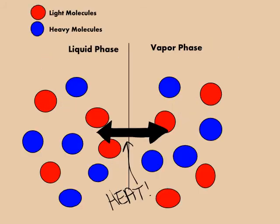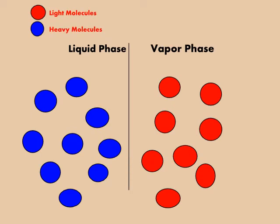The hot vapor exchanges heat with the cooler liquid. This vaporizes the lightest materials in liquid and condenses the heaviest material in the rising vapor, allowing for product separation.